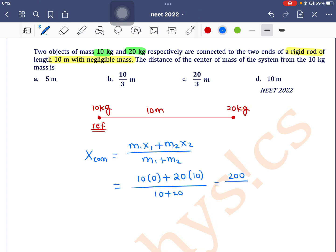So this is equal to 200 by 30, which is equal to 20 by 3 meters. So option C is the correct one.